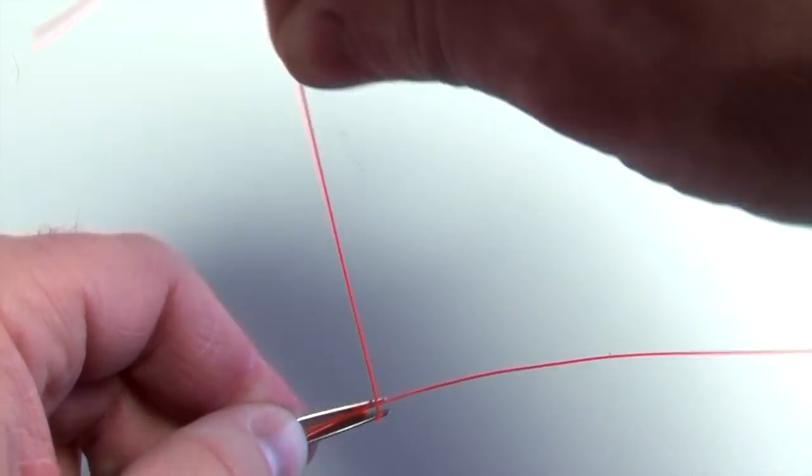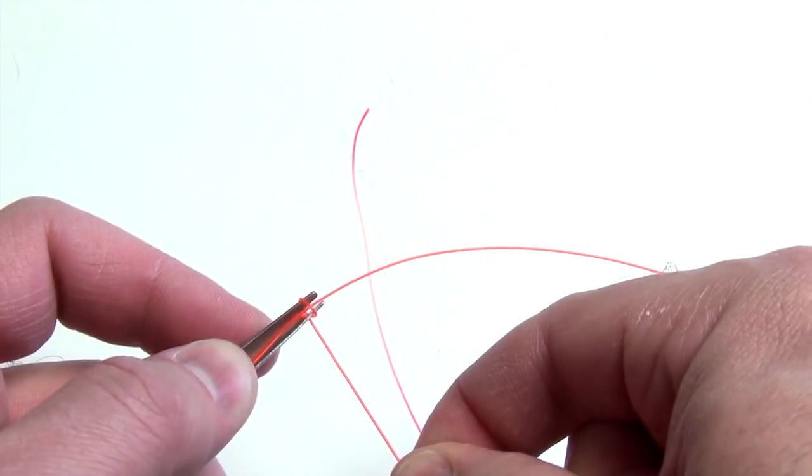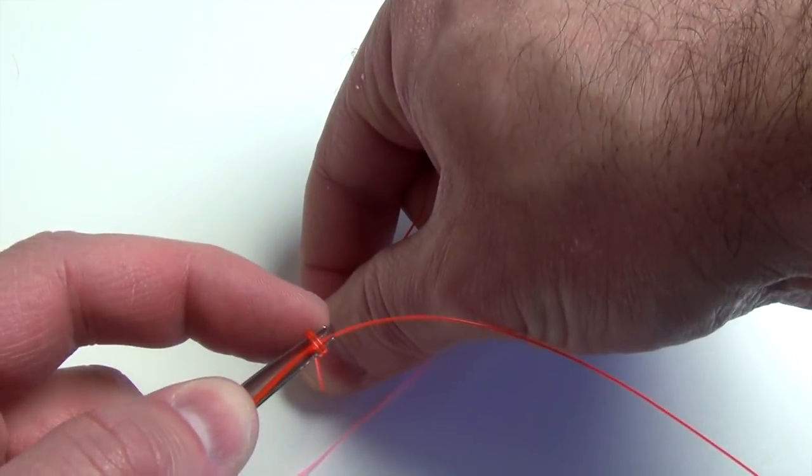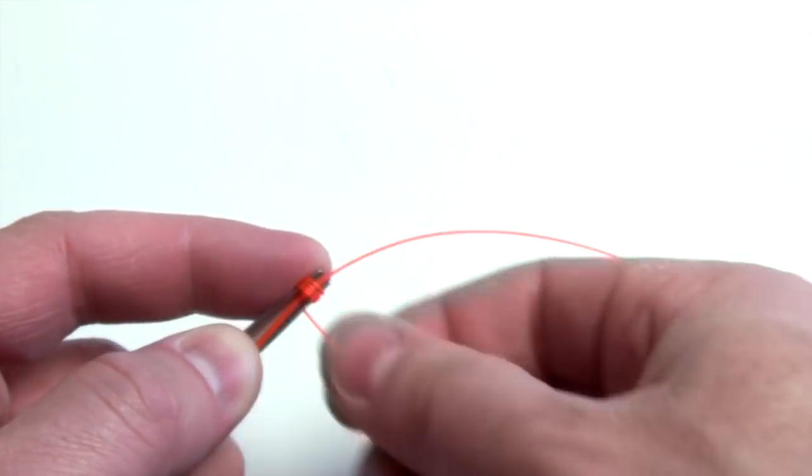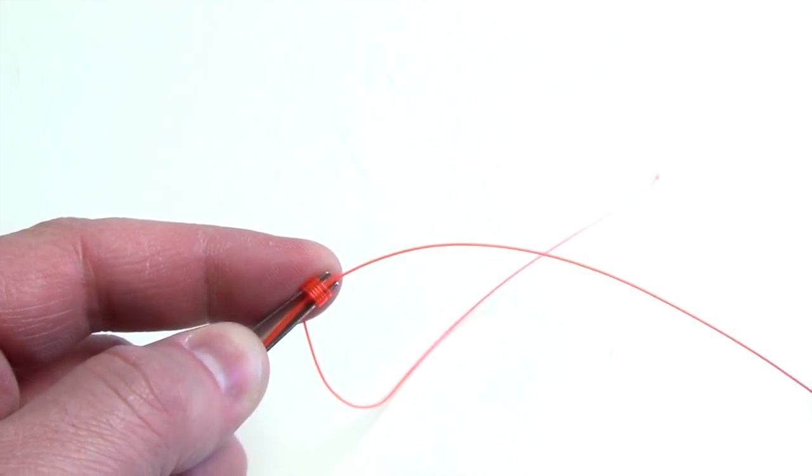Then I'm going to take the tag end of that line, and I'm going to wrap it around the nose of the tool. With each wrap, I kind of hold it in place with my index finger. We'll wrap it about five times.